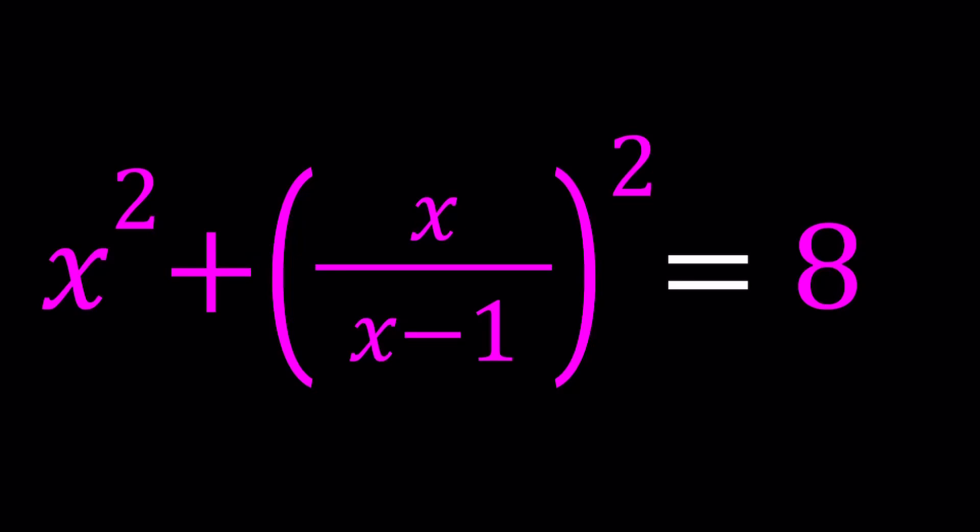Hello everyone. In this video, we're going to be solving a rational equation. We have x squared plus the quantity x over x minus 1, all squared, equals 8, and we're going to be solving for x values. I'll be presenting two methods as well as show you a graph at the end. Let's get started.